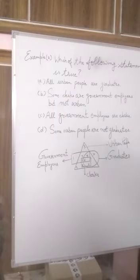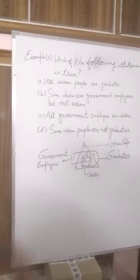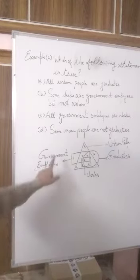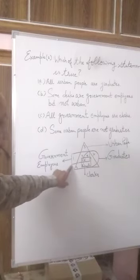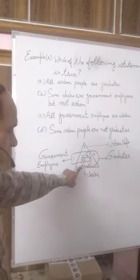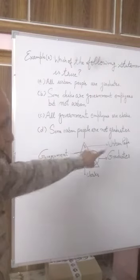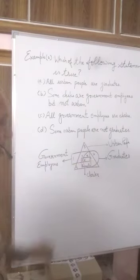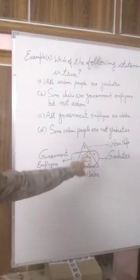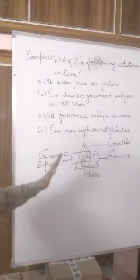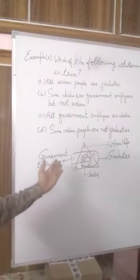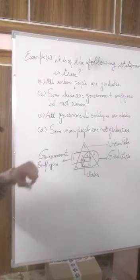Now dear students, we should study our second example, which is based on our previous diagram. Government employees is represented by rectangle, clerks by square, urban people by triangle, and graduates by circle. This diagram is similar to what we studied in the first example.